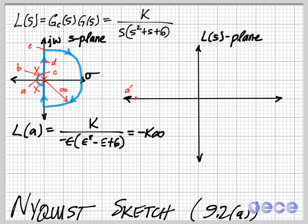So this value works out to be minus K times infinity, because this value here inside the parentheses is just 6 plus a really small number. And so we have 6 times minus epsilon under K. So it's minus K infinity.